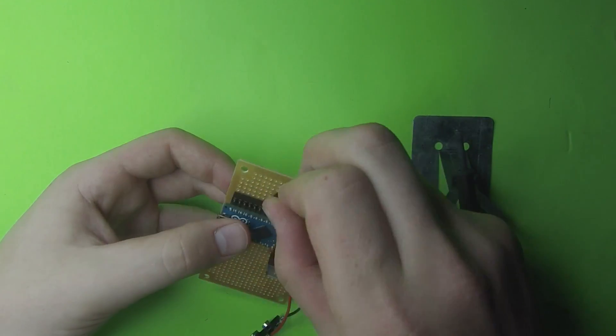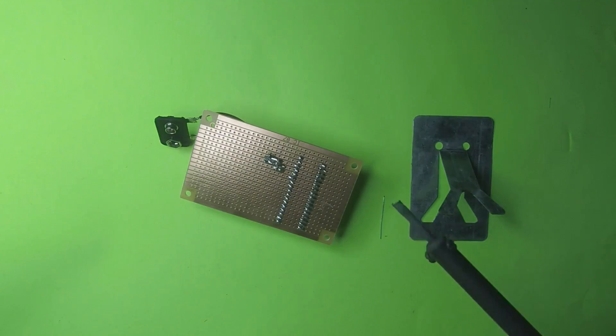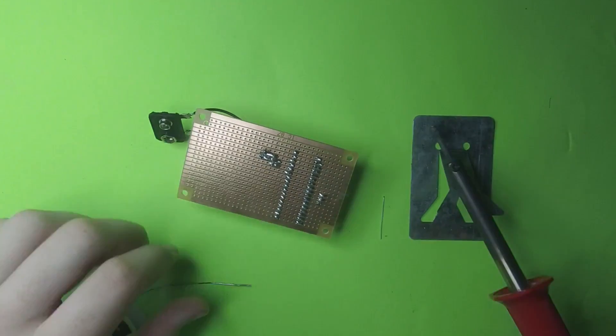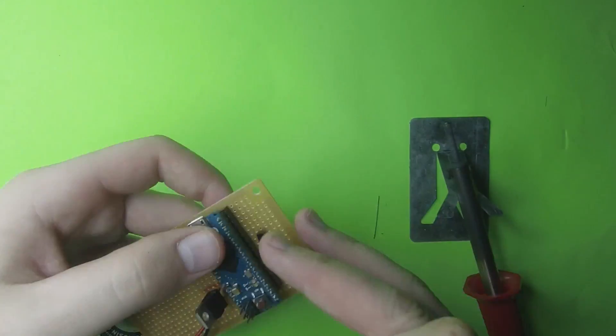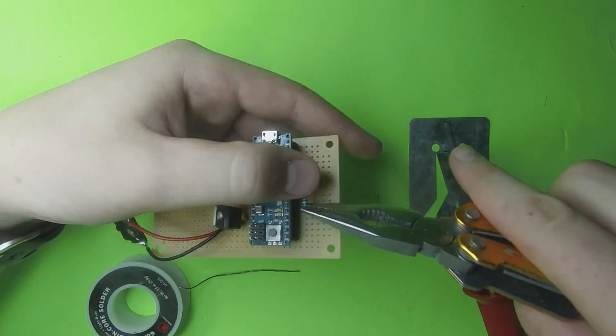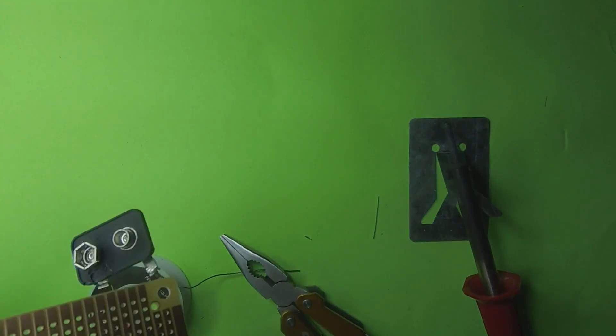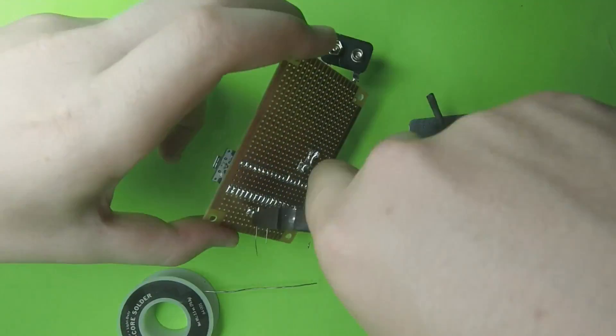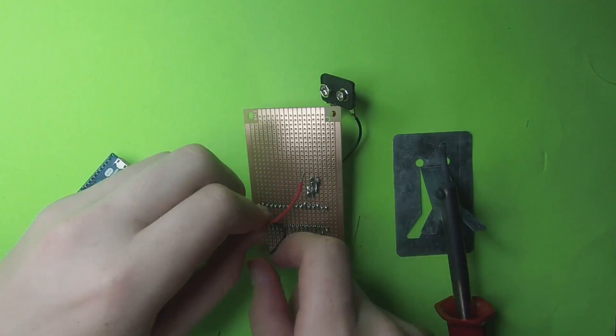Next, I placed my NPN transistor on the other side with the middle pin connected to pin 5 on the Arduino. And I soldered that into place. Next, I took the 220 ohm resistor and soldered it from the right pin to ground.